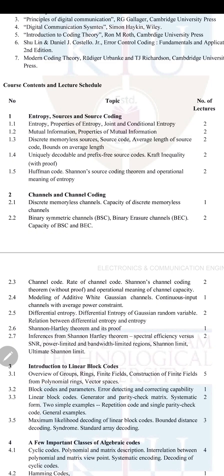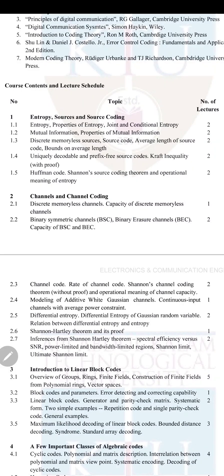The second session covers what is a source, what is the source coding theorem, what is a source code, and different types of codes such as uniquely decodable code and prefix code. It also covers theorems related to this coding technique — the Kraft inequality — as well as a coding technique called Huffman code, which is very important, and Shannon's source coding theorem. These are the main topics covered in the first module.